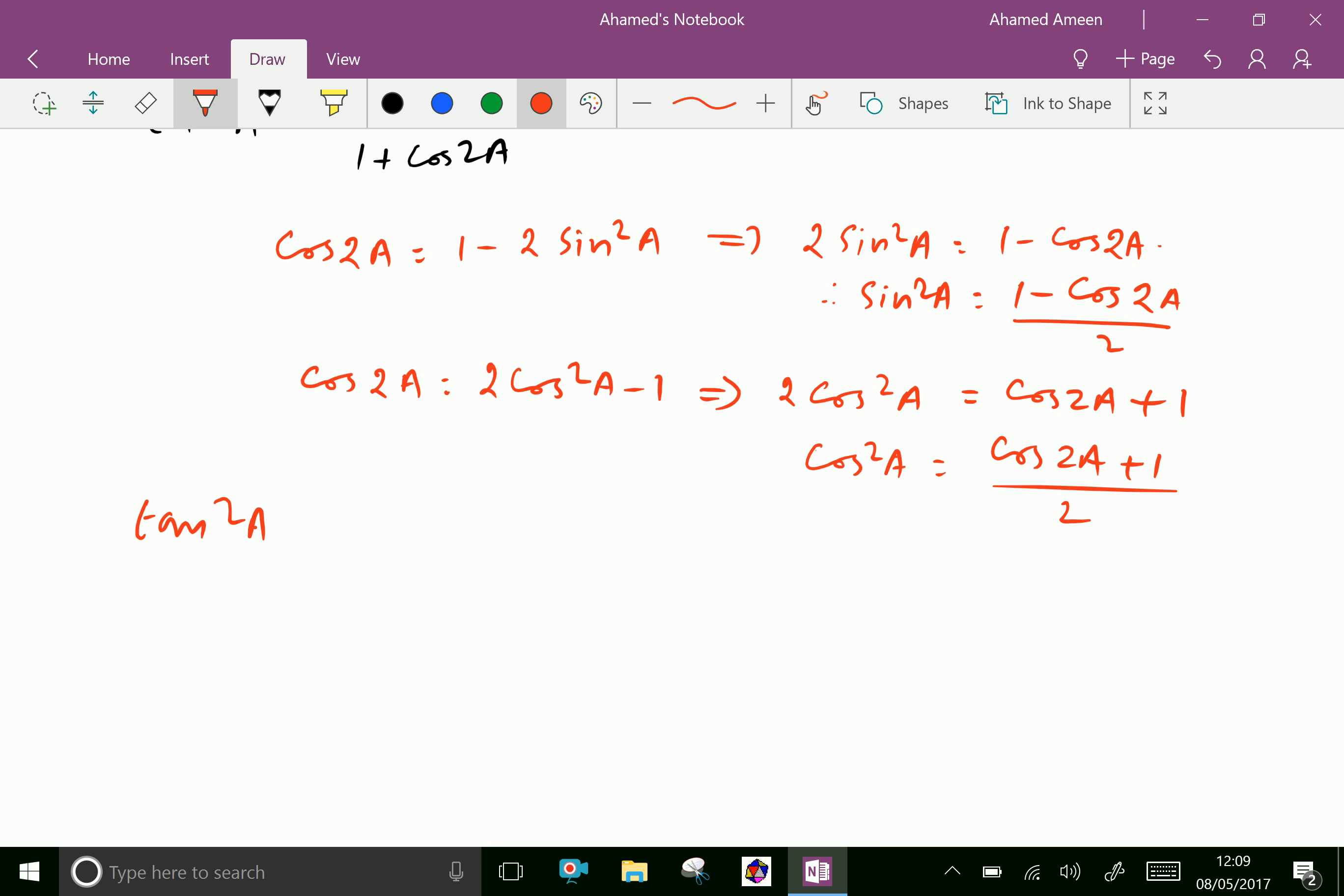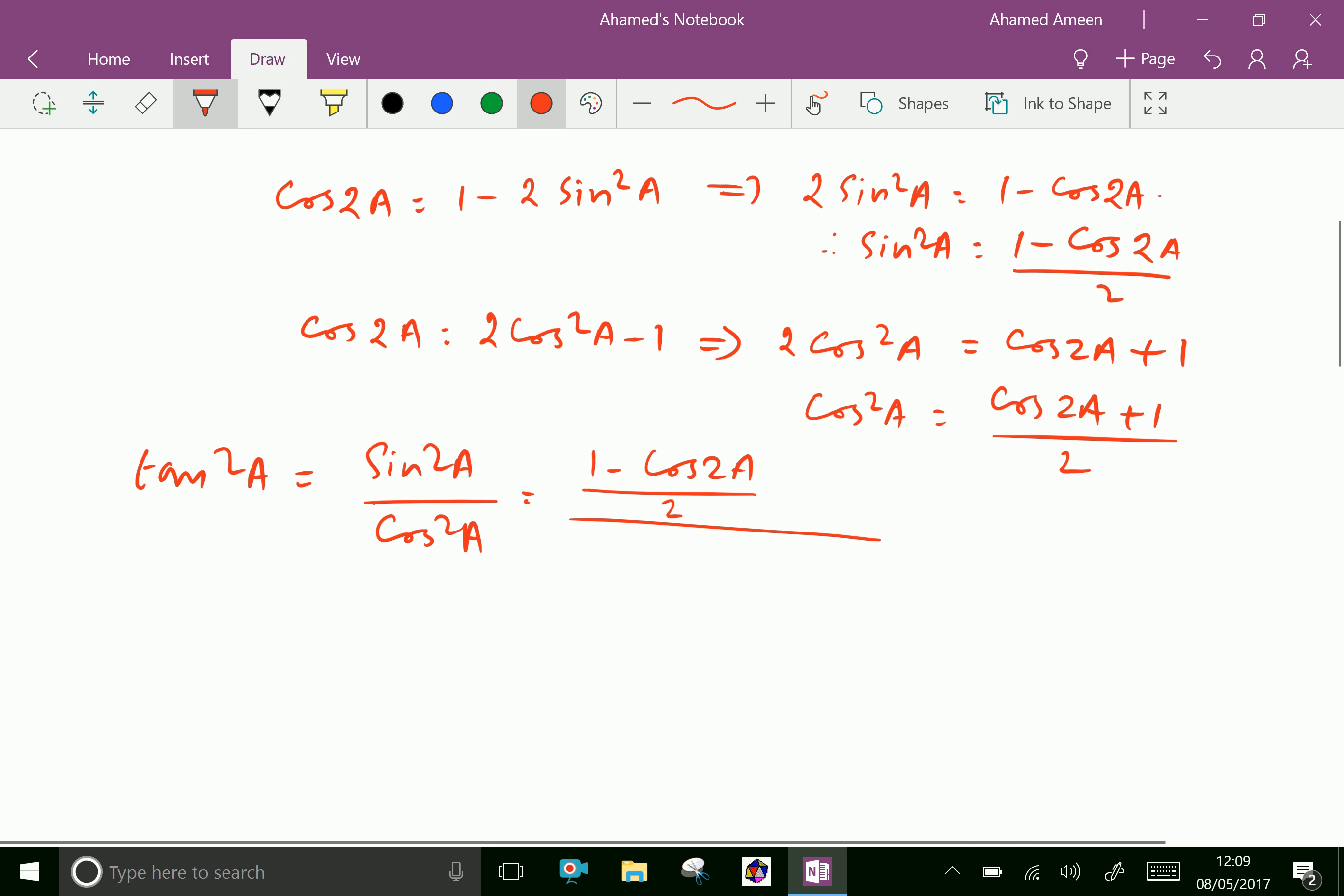Now tan squared A we can write as sin squared A over cos squared A. We already have sin squared A as 1 minus cos 2A over 2, then divided by cos squared A, which is cos 2A plus 1 over 2.